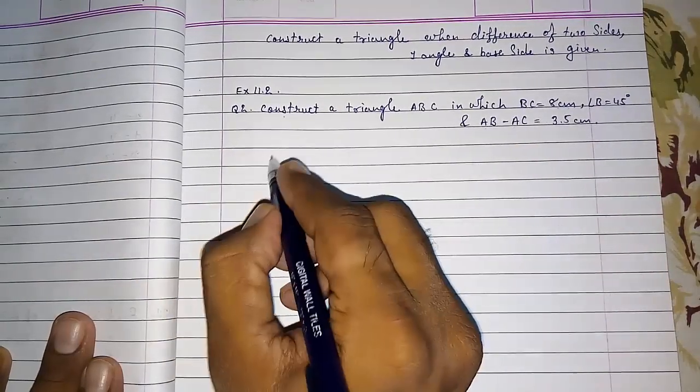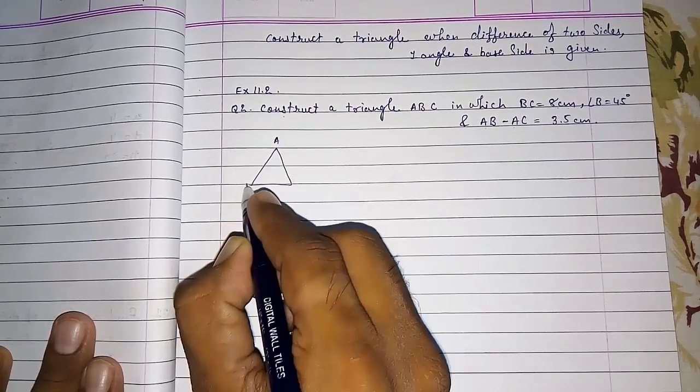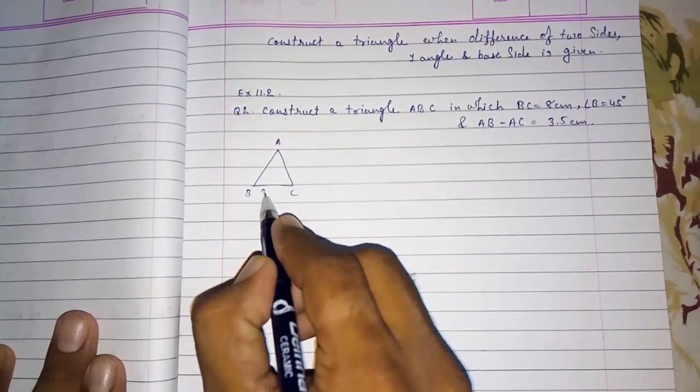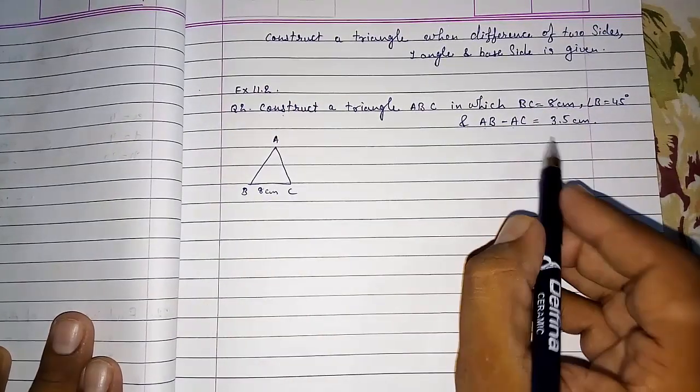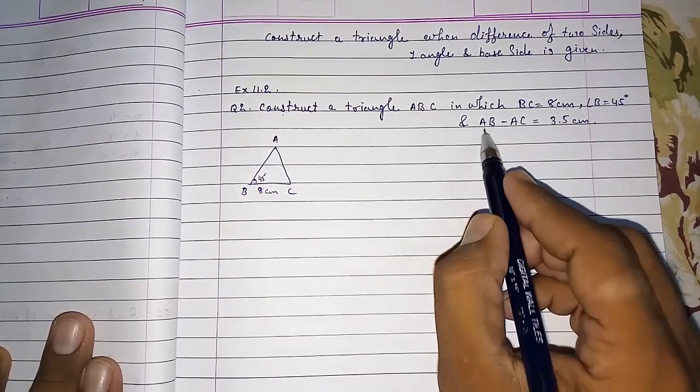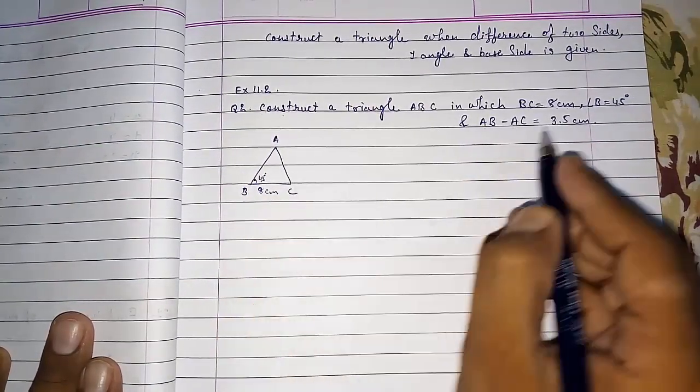Now they told us to construct a triangle ABC, so I am going to make a rough figure ABC where BC is 8 cm. This will be 8 cm. They told angle B is 45 degrees. AB minus AC means the subtraction of AB minus AC is 3.5 cm.